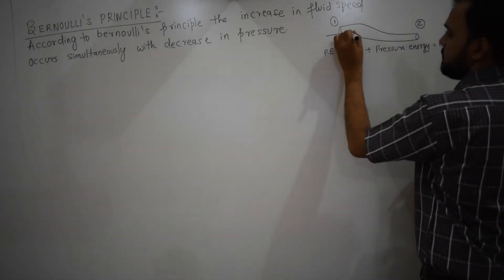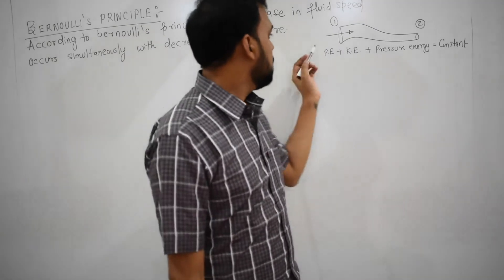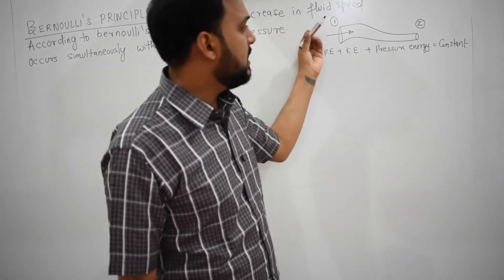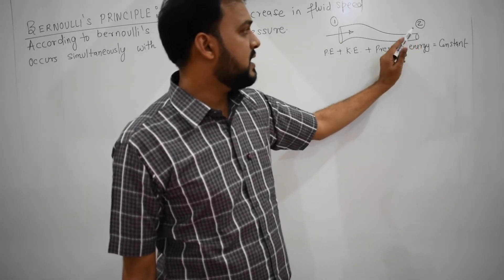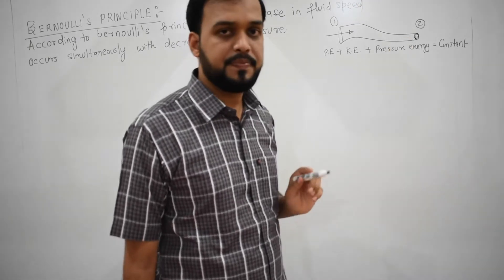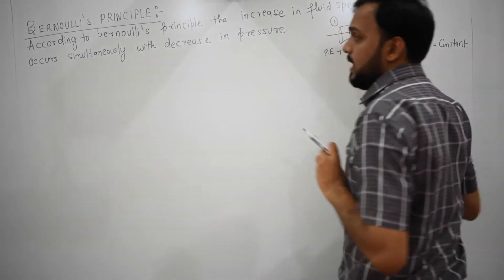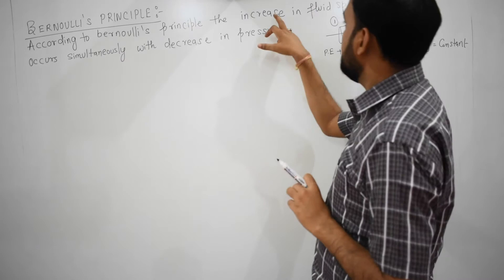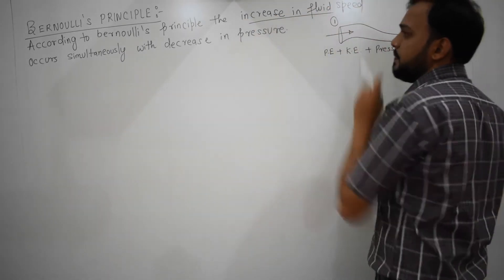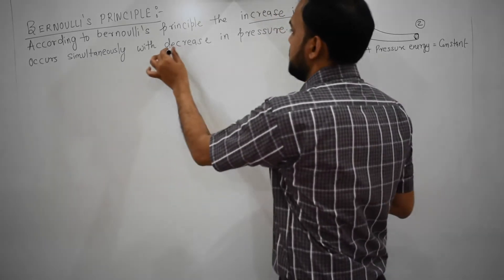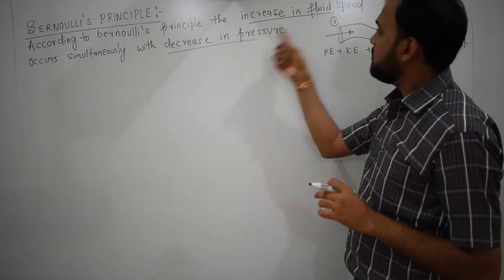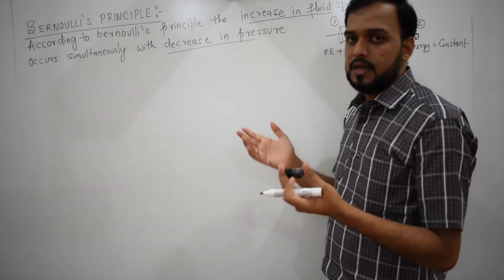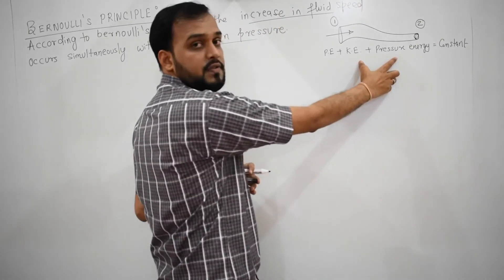For example, if the liquid is going through this pipe, whatever pressure plus kinetic energy plus potential energy you have at this end, the same potential, kinetic, and pressure energy would be at the other end. The statement also suggests that according to Bernoulli's principle, the increase in fluid speed occurs simultaneously with a decrease in pressure, because the sum of these two would be constant. So if one increases, the other should decrease in order to satisfy the law of conservation of energy.